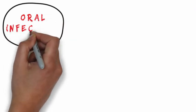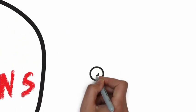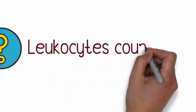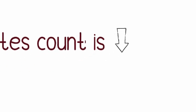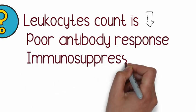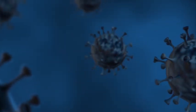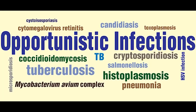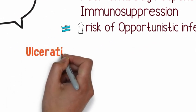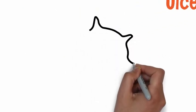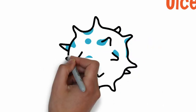Next is oral infections. The three main factors contributing to a patient's susceptibility to infections are reduced leukocyte count or leukocytopenia. Leukocytes are the backbone of our immune system. When the leukocyte count falls below 1,500 per cubic millimeter, the patient is unable to mount a proper antibody response, becomes immunosuppressed, and is more susceptible to opportunistic infections. Microorganisms can gain portal of entry into the systemic vasculature, especially when ulcerations are present.